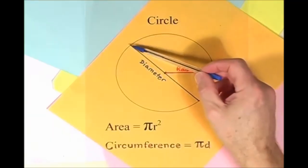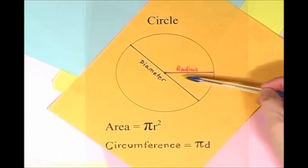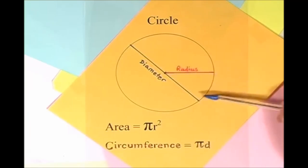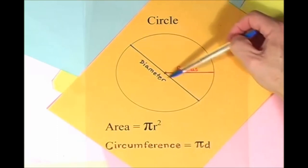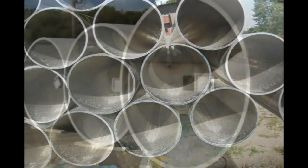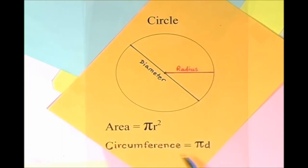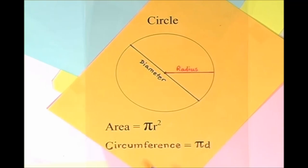Here is a circle, it knows how to get around. It has a radius from center to rim. And its diameter's a line that goes from side to side while passing through the center, now isn't that simple. Pi r squared sounds like area to me, when I need a circumference, I'll just use pi d.